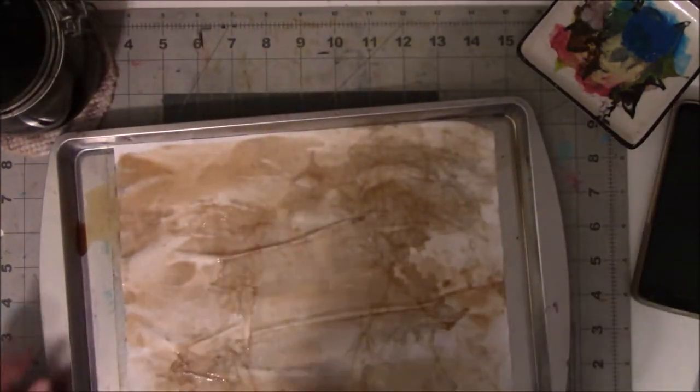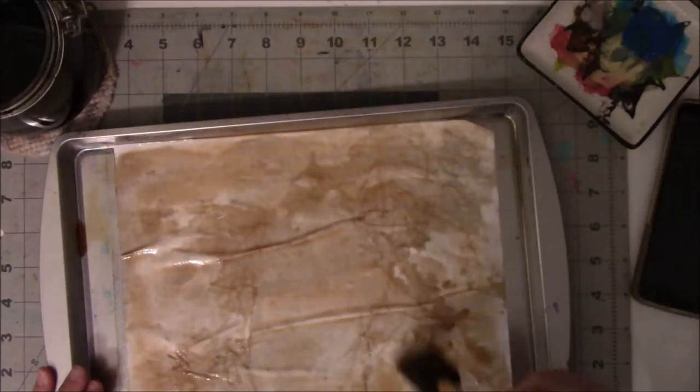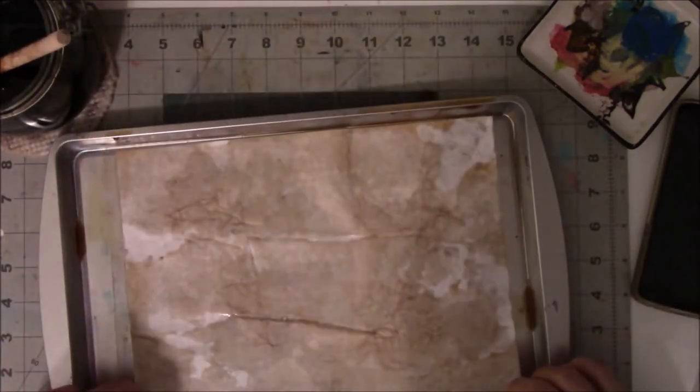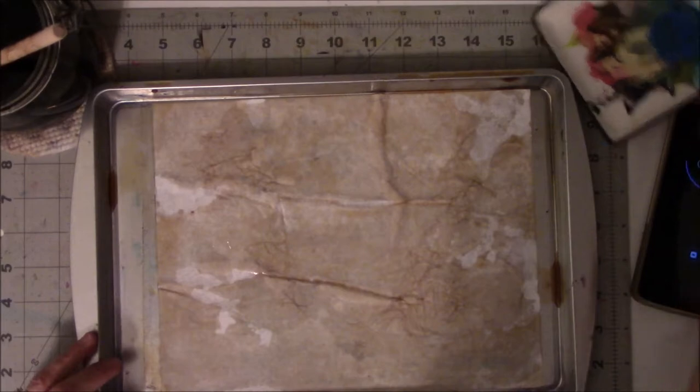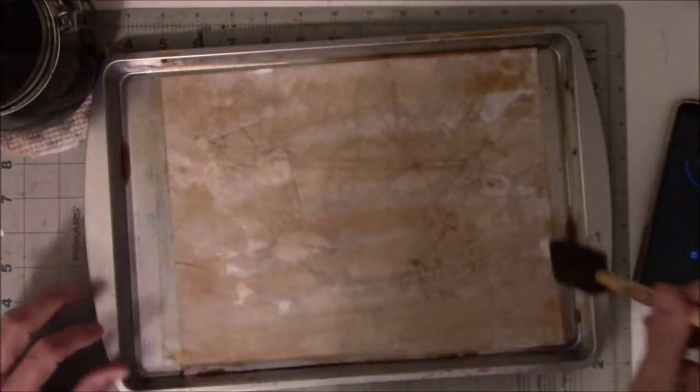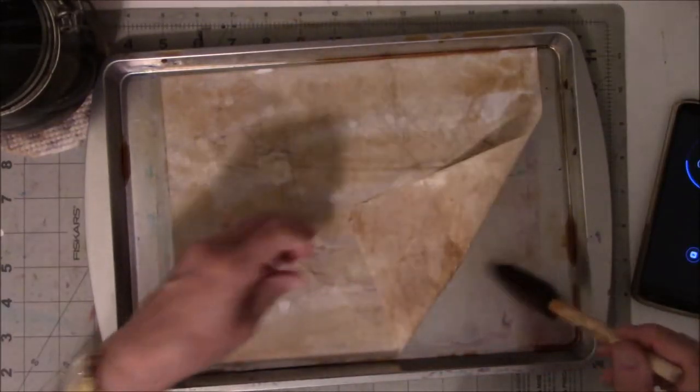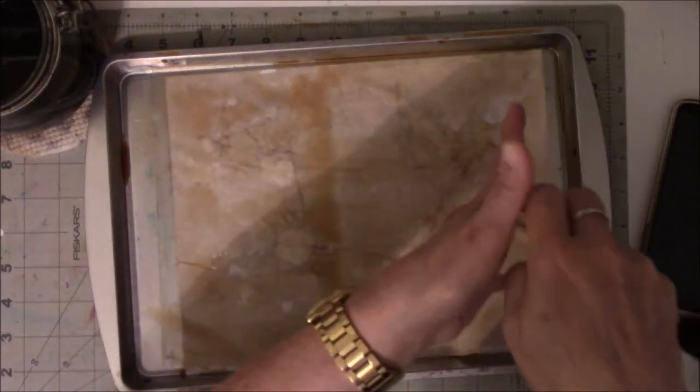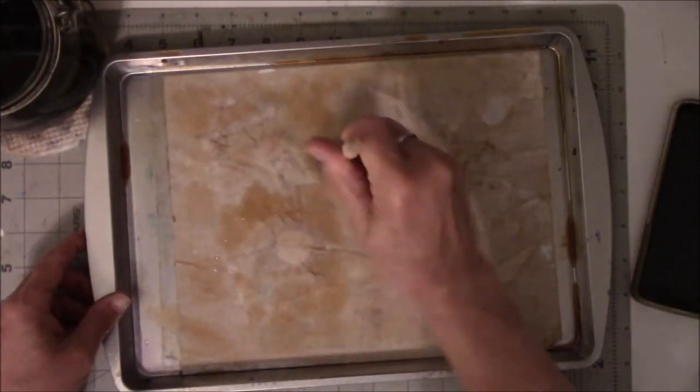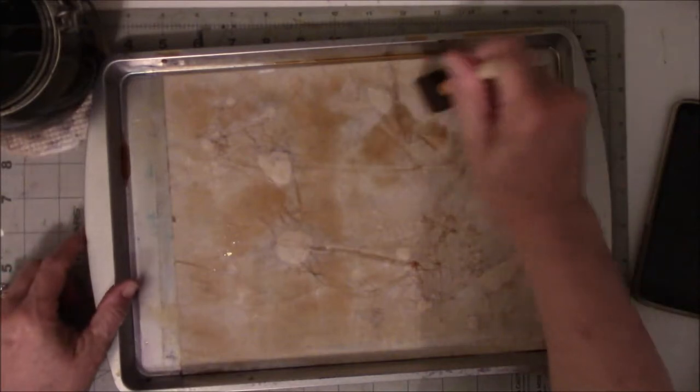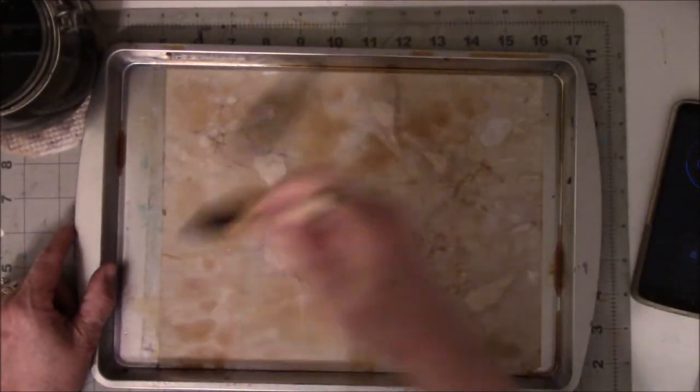So I just brush it on, and a mistake that a lot of people make is that they only brush the coffee on one side thinking it's going to soak through to the other. Look, it doesn't always soak through to the other side, so be sure to do the coffee on both sides. And if there's a little left on the tray, all the better, because what will happen is it will gather underneath and pool.